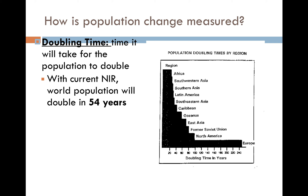Another statistic that helps us understand population change is doubling time — the time it will take for a population to double. With the current natural increase rate, the world's population is due to double in 54 years. Conceivably within our lifetimes, we could see the world's population double — that is an enormous number of people. So that is the reason why so much of our current global affairs are focused on meeting the needs of population change.